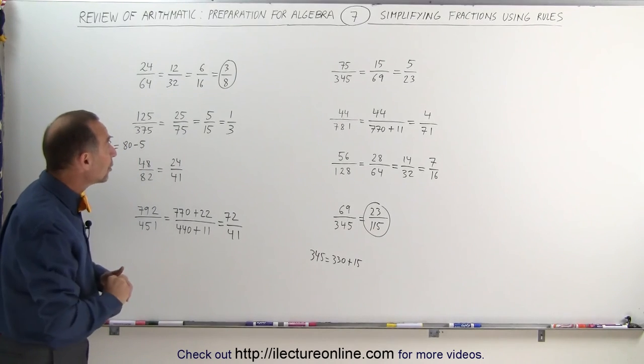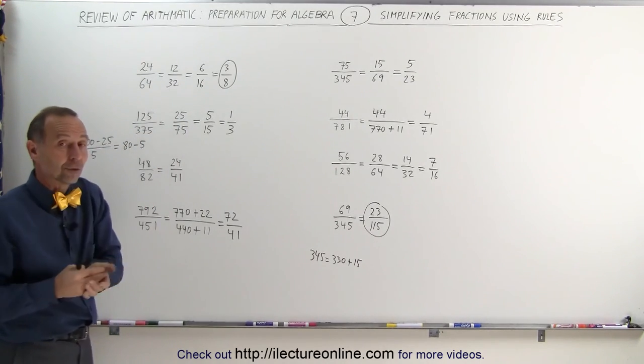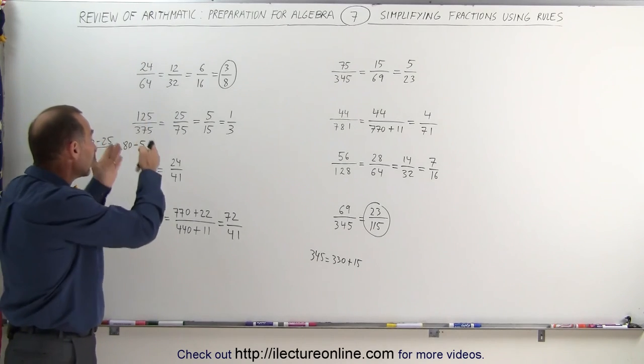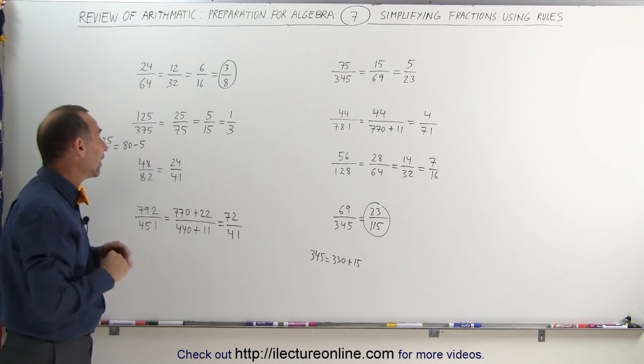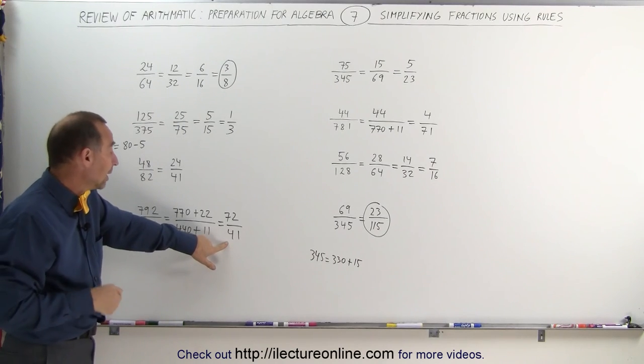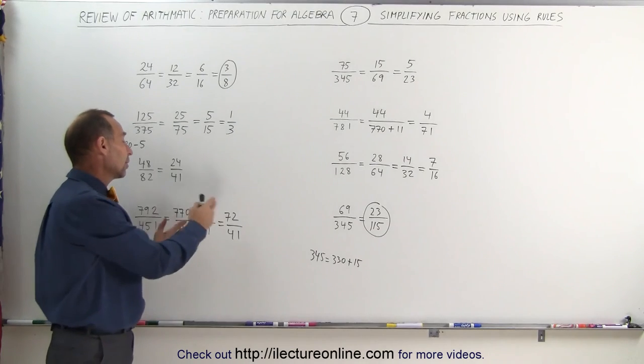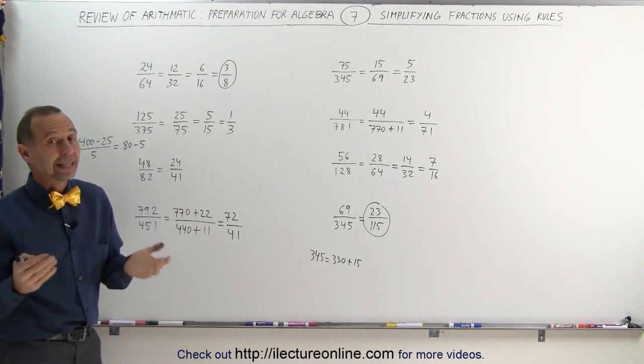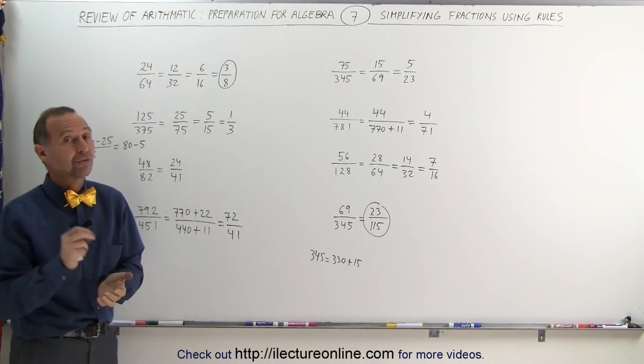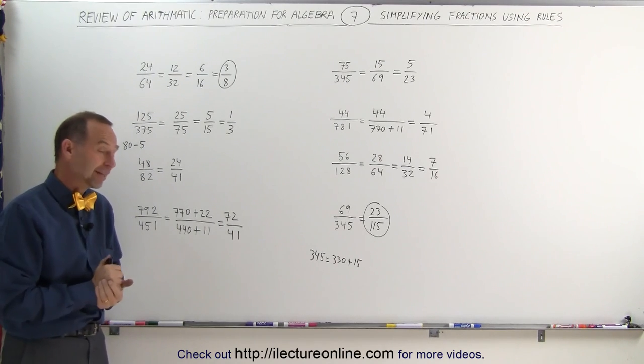That's the way in which you can take fractions and very quickly, using the rules that we just learned in the previous video, whittle it down to a simplified fraction. In some cases, we have what we call an improper fraction here, but unless somebody tells you to change it into a mixed number, we can just leave it as such. That's how we simplify fractions very quickly using the rules that we learned about divisibility. That's how it's done.